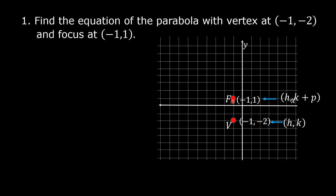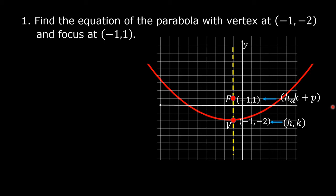The focus is above the vertex. Therefore, the parabola opens upward. This is the axis of symmetry. If the parabola opens upward, then the value of p is greater than zero. And in this figure, p is equal to 3.